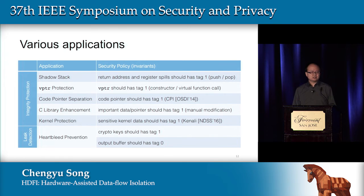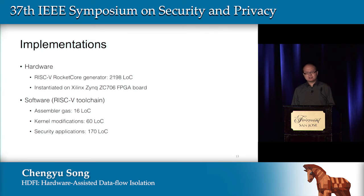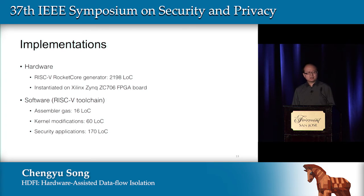We also have a demonstration of how to utilize HDFI to prevent information leaks such as the Heartbleed attack. We implemented HDFI based on the RISC-V Rocket core generator with about 200 and 2,000 lines of code and instantiated it on the Xilinx FPGA board for evaluation. For the software side, we modified the toolchain to recognize our new instructions and handle new exceptions.